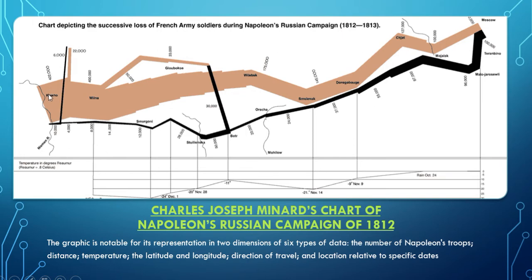They started with 422,000 troops, and the graphic shows the migration toward Russia. You can see the troops declining rapidly even before they arrive — by the time they reach Moscow, they have only 100,000 troops. The black line shows their retreat. The line gets thinner and thinner as more troops are lost. At one river crossing, they went from 50,000 troops to 28,000 — losing 22,000 troops in just two days. They came back with only 10,000 troops, meaning just one out of every 42 people in that campaign made it back.